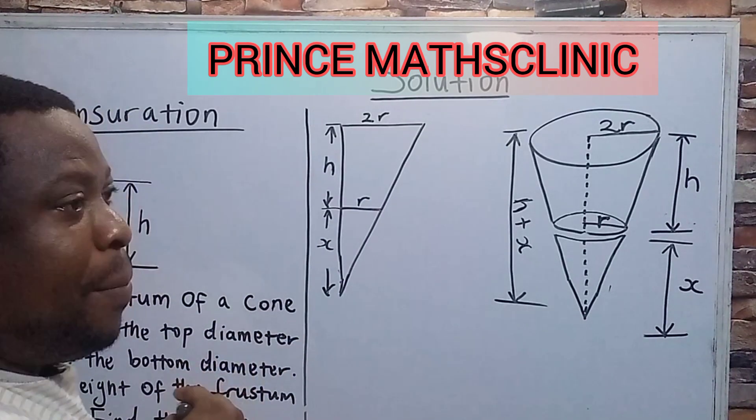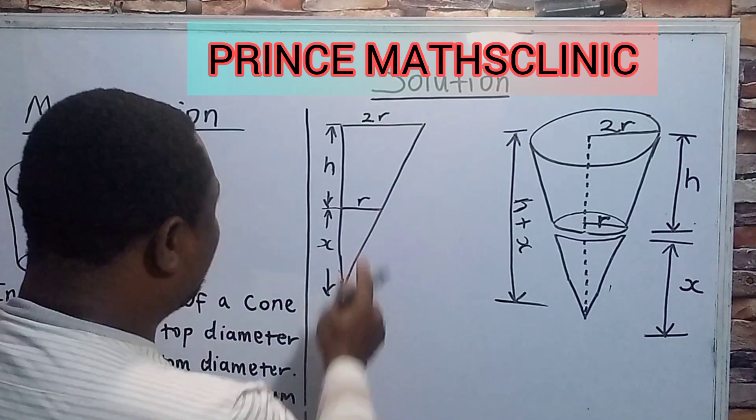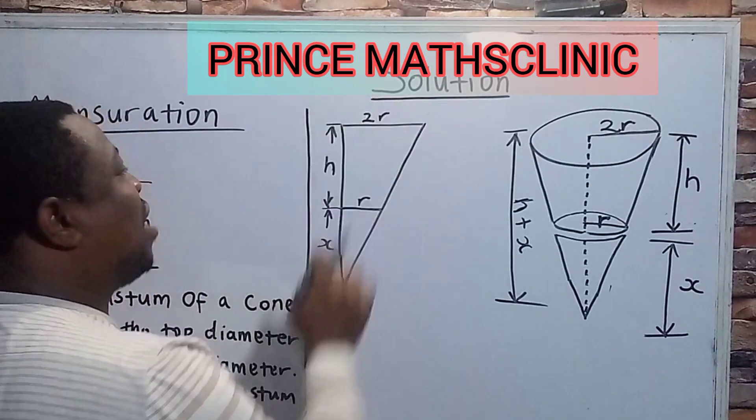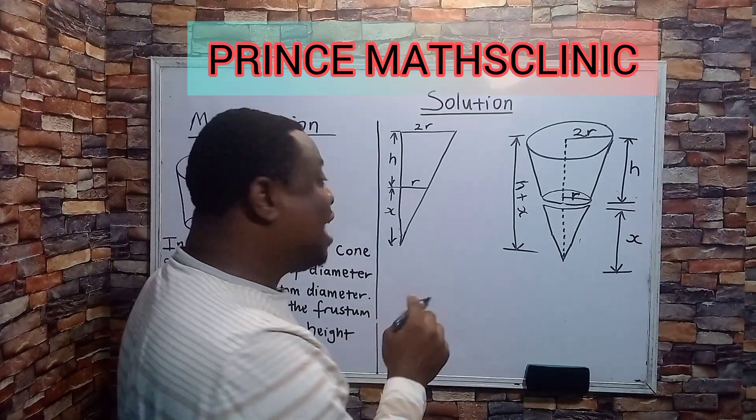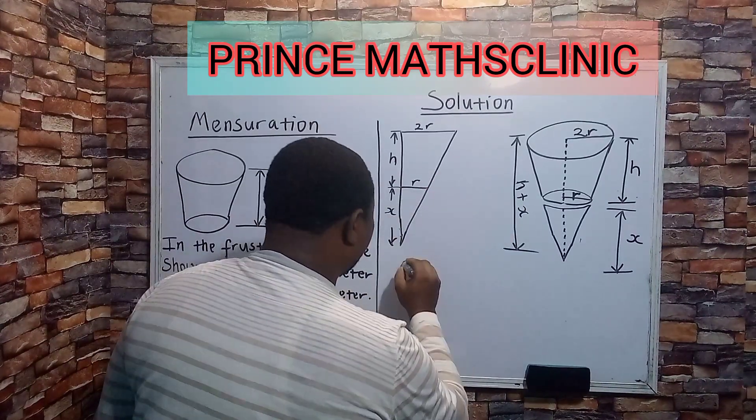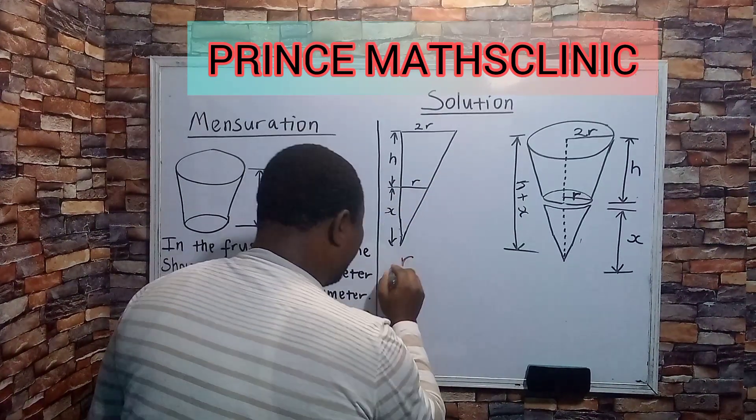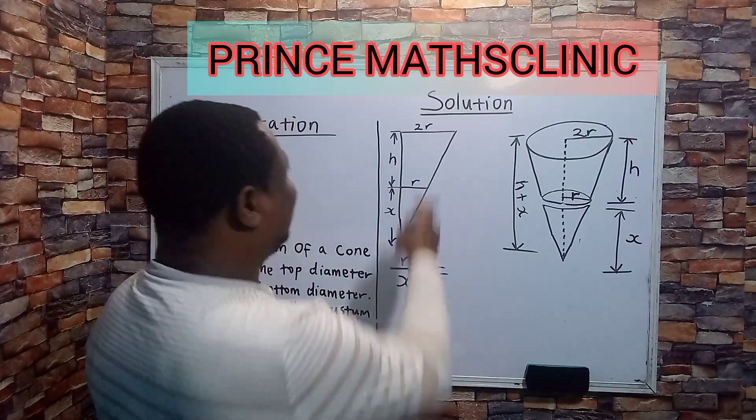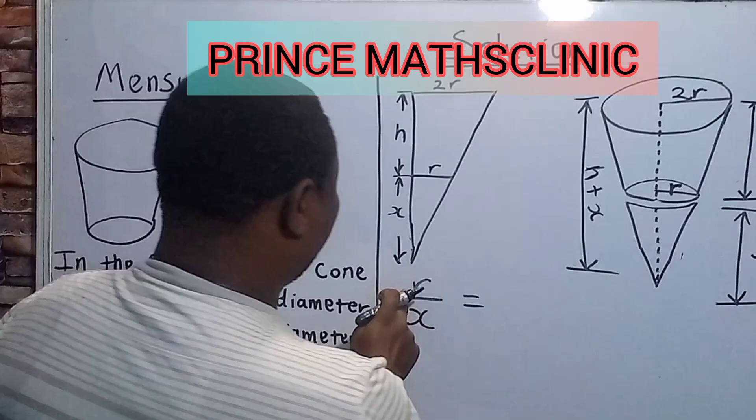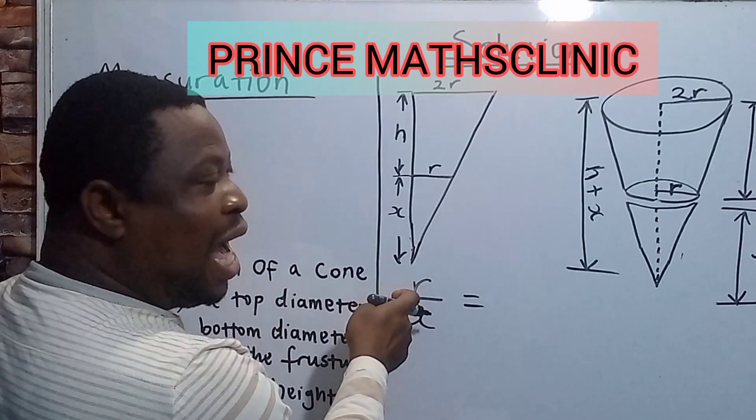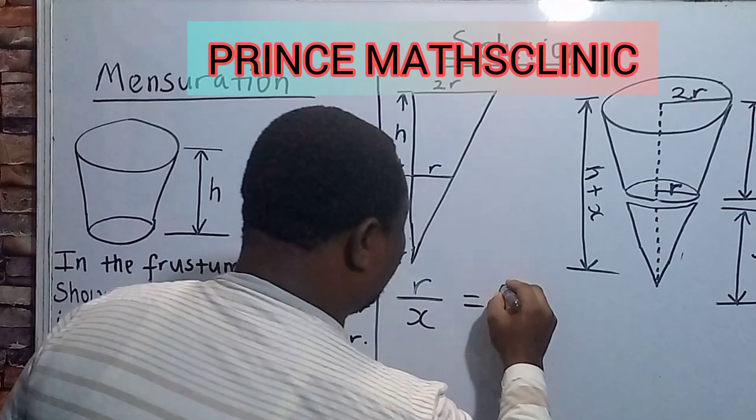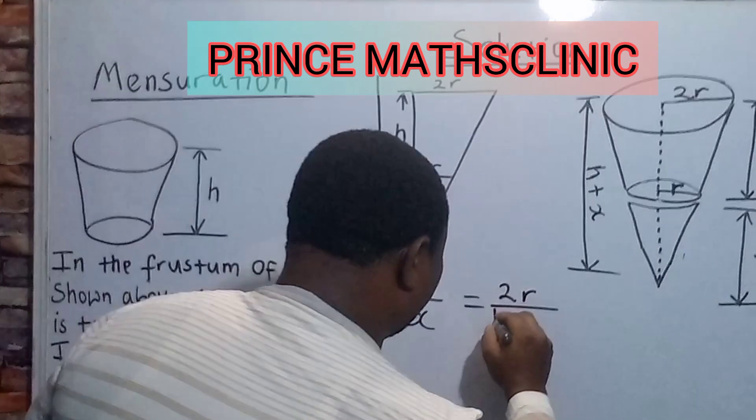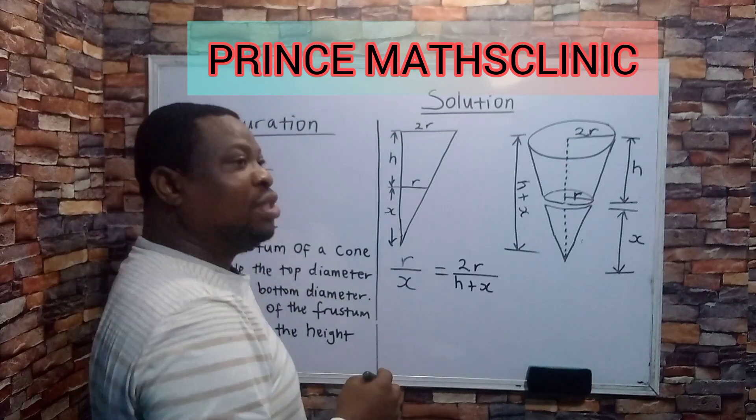So if I am to make comparison, now I will make comparison within this small triangle and this larger triangle. So the ratio of the size of this small triangle is r over x. Then for the larger triangle, I mean, remember, radius to this particular height. So I want to do radius here, which is 2r. Then the height here becomes h plus x.